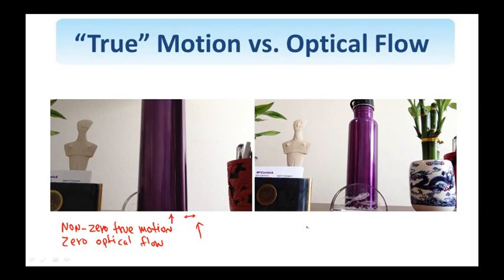I want to demonstrate the second case by this video. The case of zero true motion, non-zero optical flow. Due to the change in the ambient light, the optical flow is non-zero. If you focus, for example, on this statue or this business card holder.